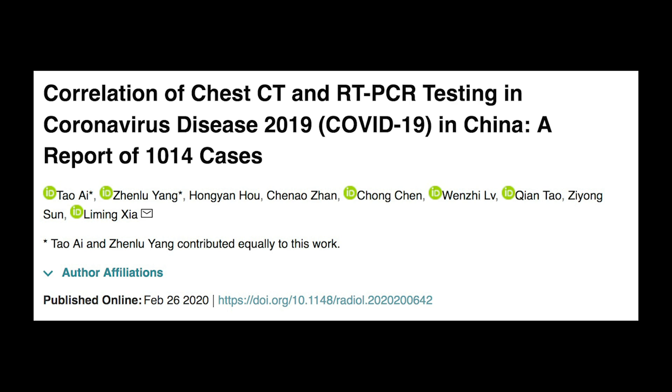In this study, they looked at 1,014 cases of suspected COVID based on certain symptoms. As the reference standard, they used reverse transcription polymerase chain reaction, or RT-PCR, to determine positivity or negativity for COVID-19. Based on that data, they were able to calculate the sensitivity and specificity of CT for the detection of COVID-19, and they were also able to test positive predictive value and negative predictive value. But let's see how they got to these numbers.